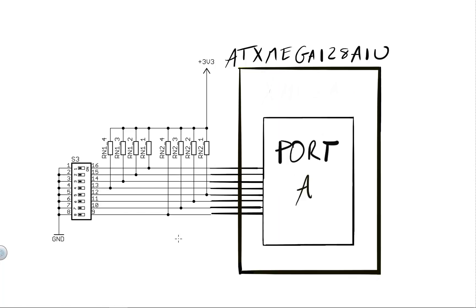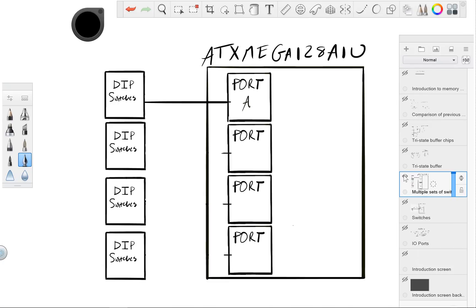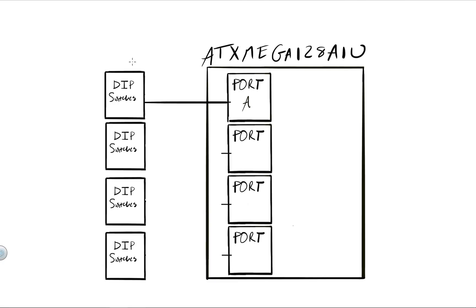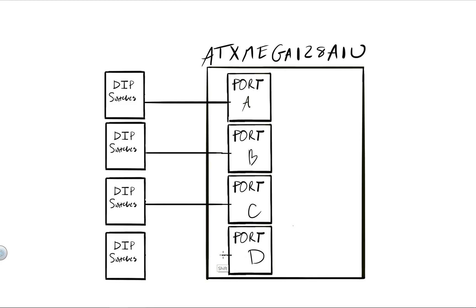Let's assume I have four sets of 8-bit DIP switches to connect to my microcontroller, and one set is already connected to Port A. The obvious approach is to connect each set of DIP switches to a corresponding port — Port B, Port C, and Port D — as long as I have the resources. After making those connections, the topmost set corresponds to Port A, next to Port B, then Port C, and the last to Port D.